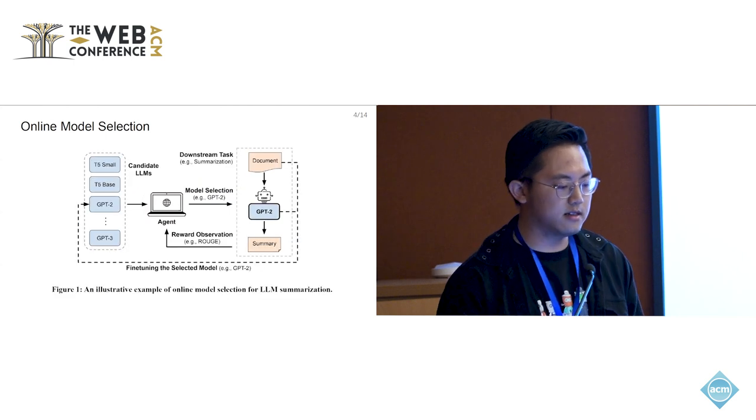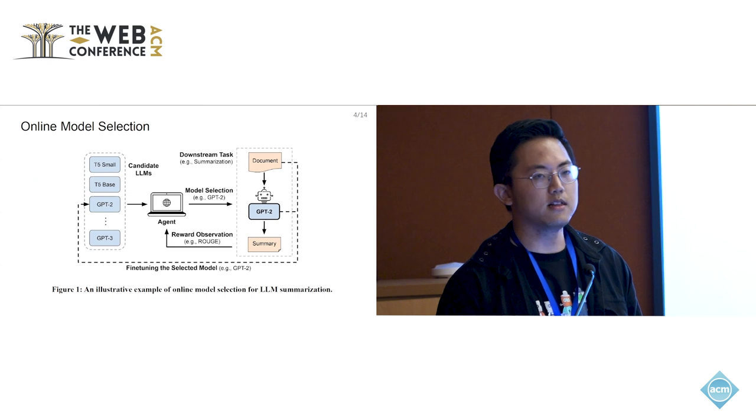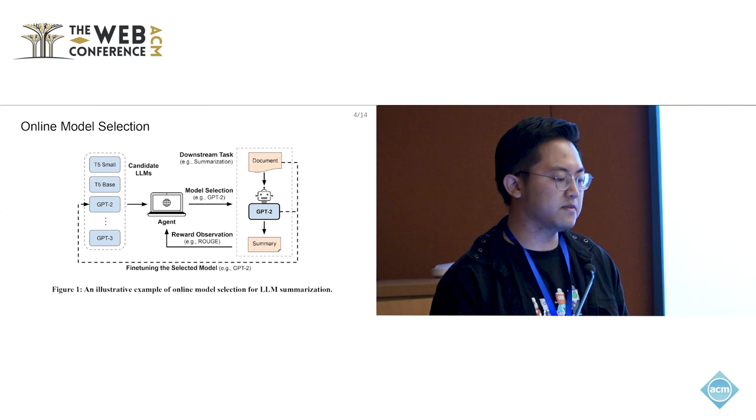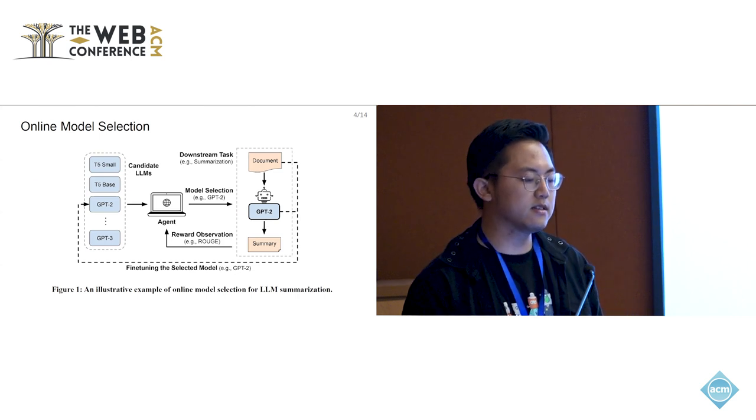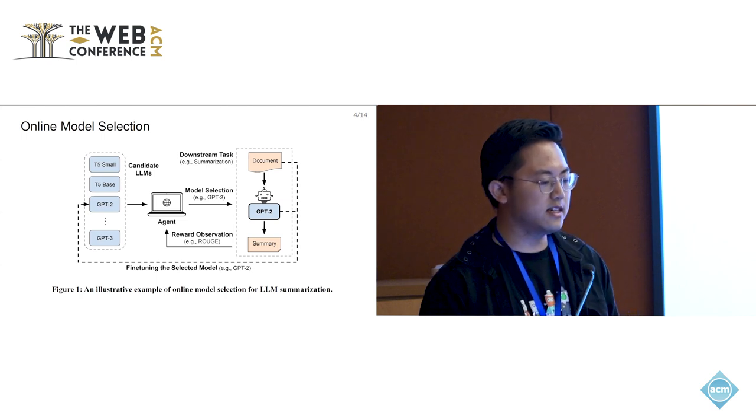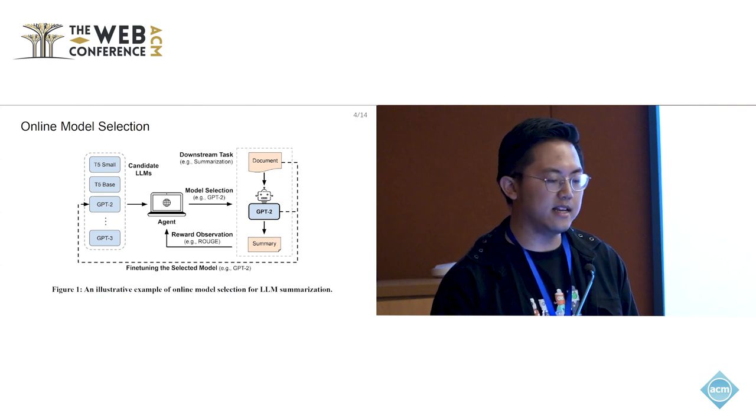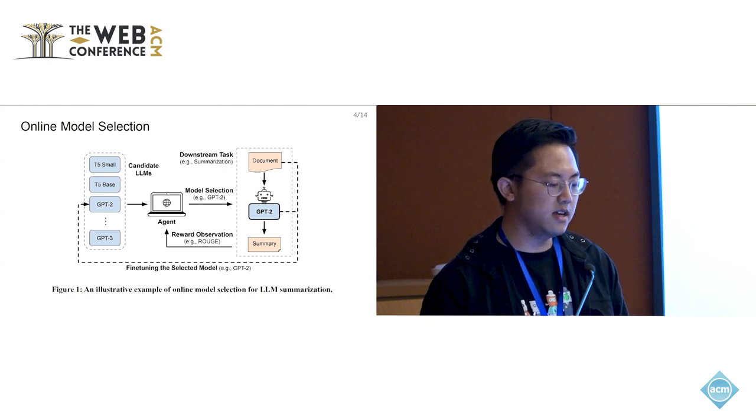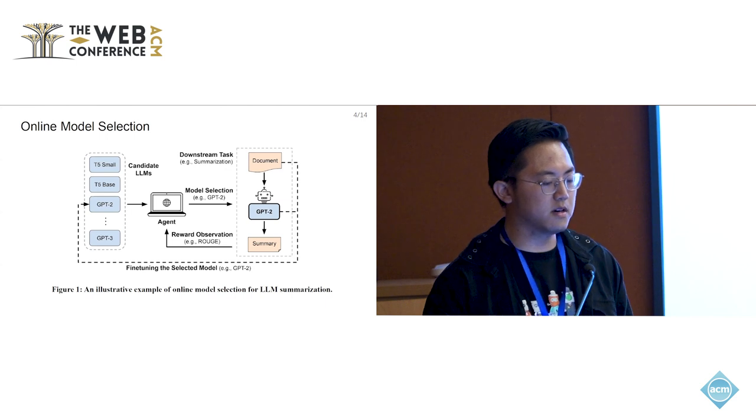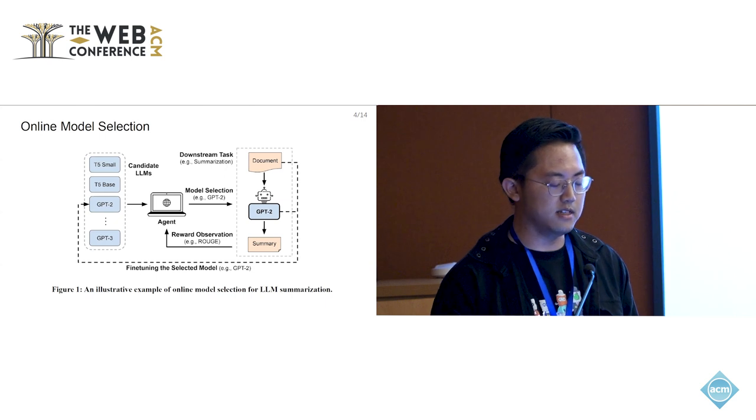Here's an illustrative example of online model selection for a large language model summarization task. Suppose we have candidate large language models T5 small, base, and GPT-2. We are given a document for summarization. Given this document, the agent first predicts the performance of all models after being trained on this document, and then selects the most promising one, for example, GPT-2, to evaluate GPT-2's performance on this document. Then the agent observes the reward, for example, the ROUGE score. After that, the selected GPT-2 model is fine-tuned with this batch of data samples.